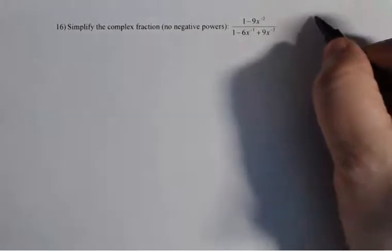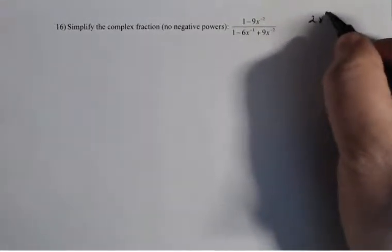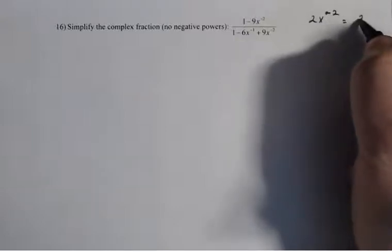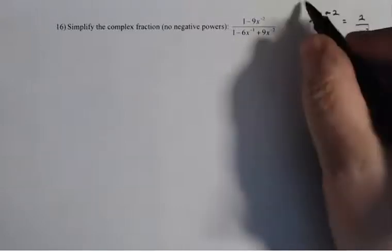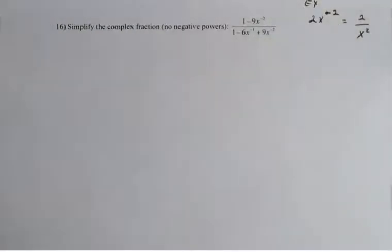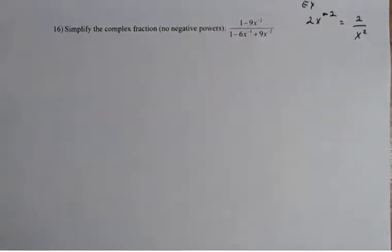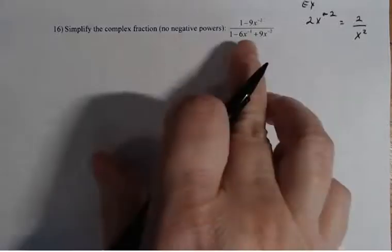So remember, if you have, say, 2x to the minus 2, that's the same thing as 2 over x squared. So that is an example of the type of rule I'm going to use here.